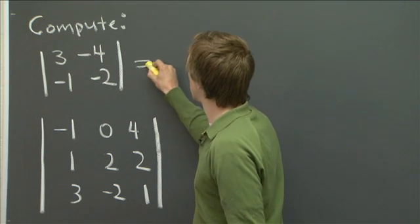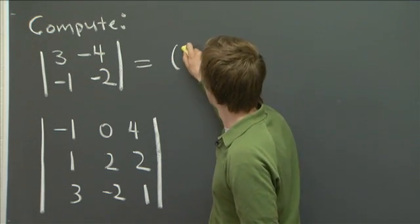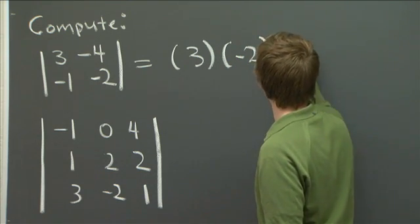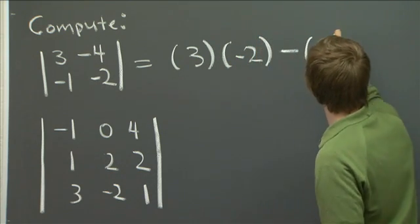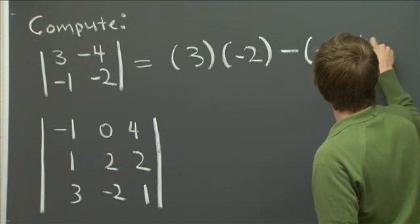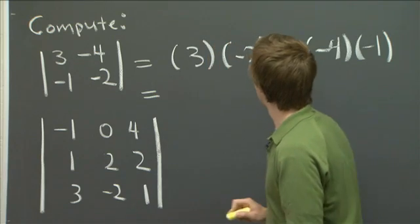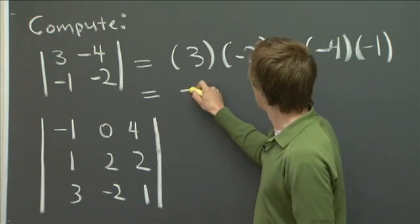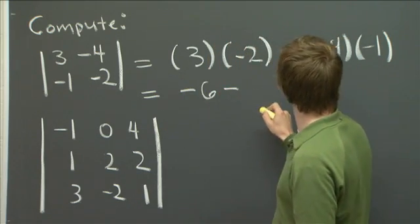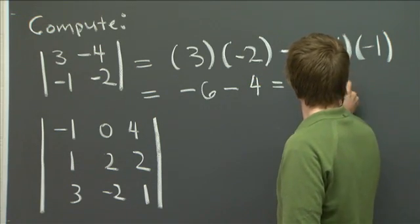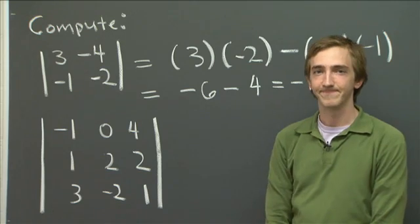So in this case, we have 3 times minus 2 minus minus 4 times minus 1. So we have minus 6 minus 4 is minus 10.